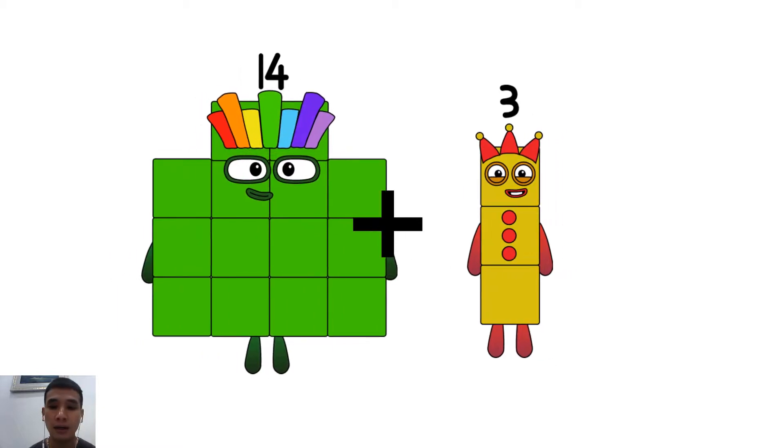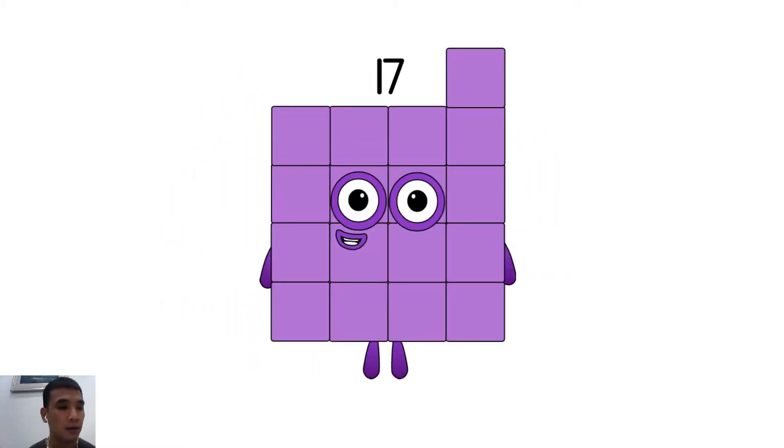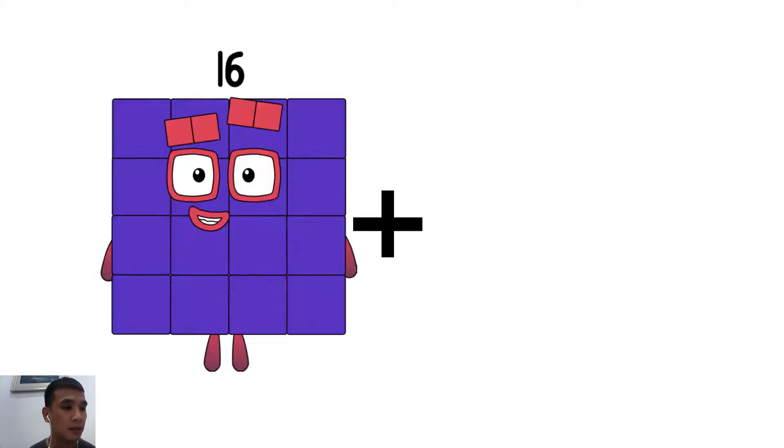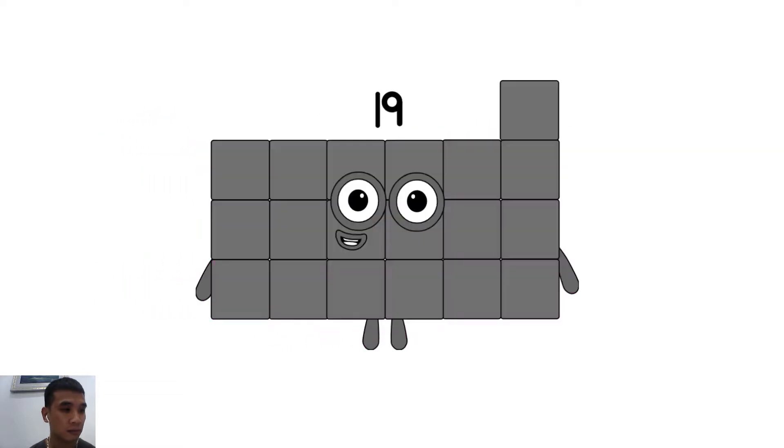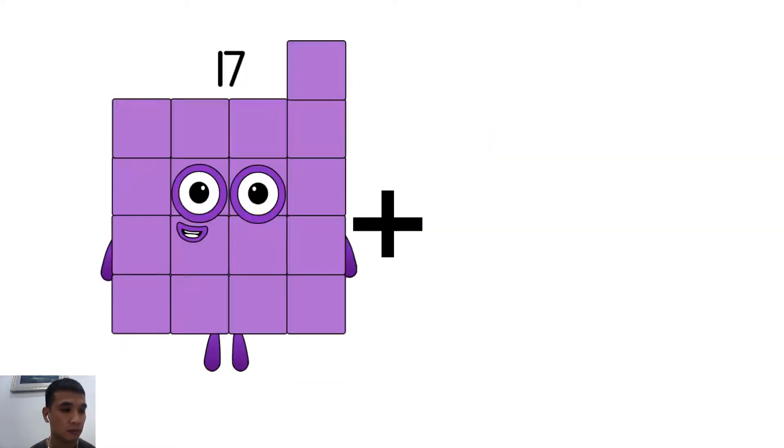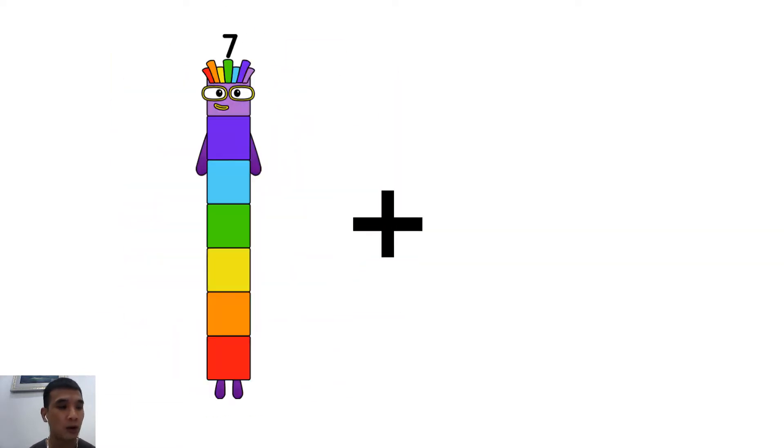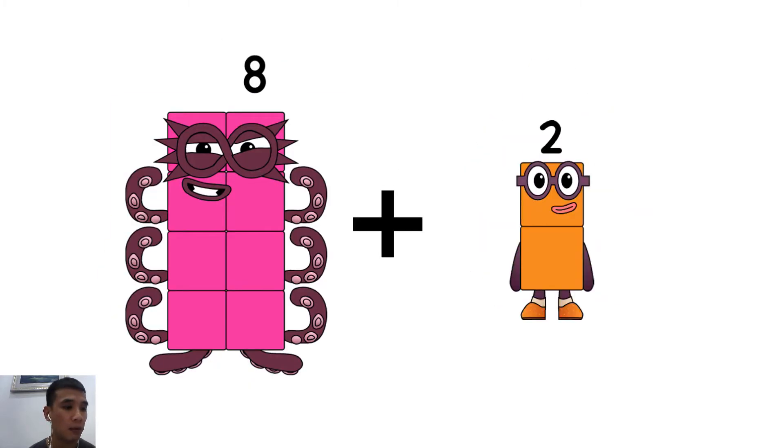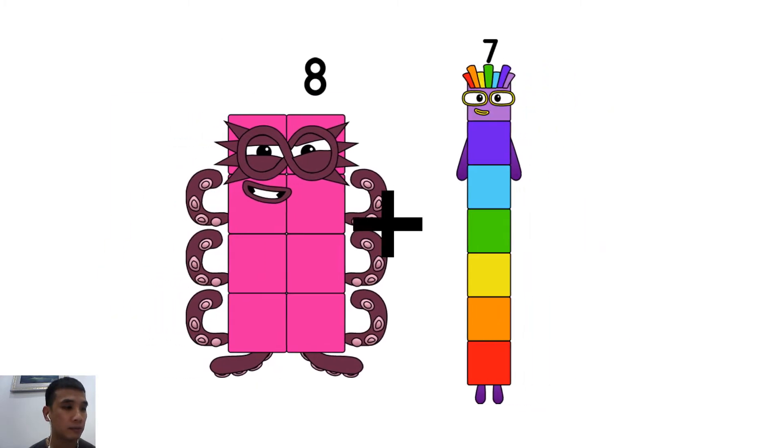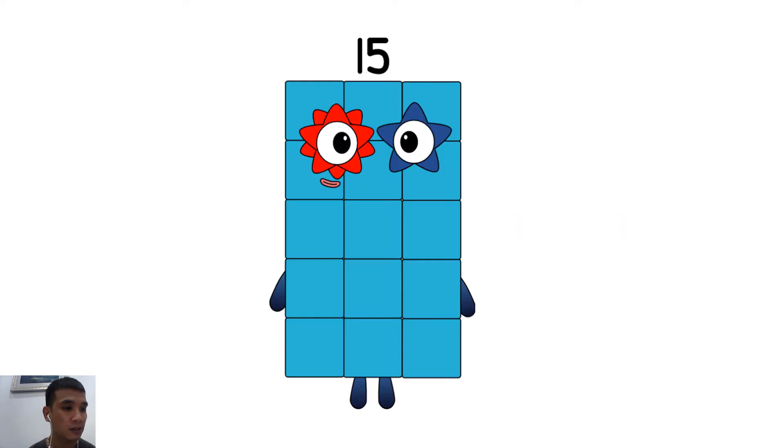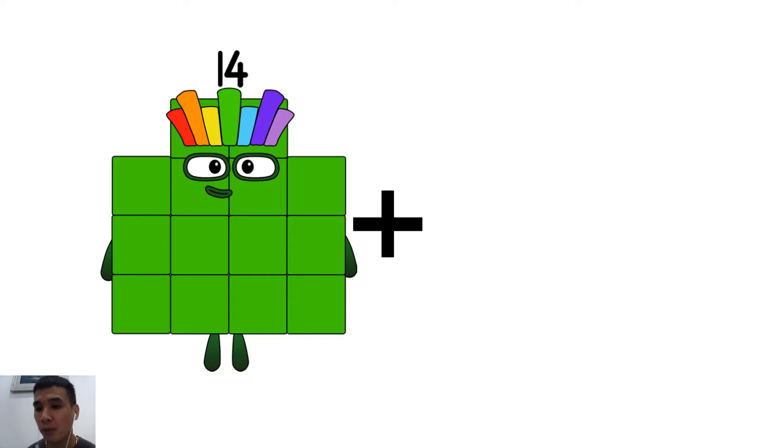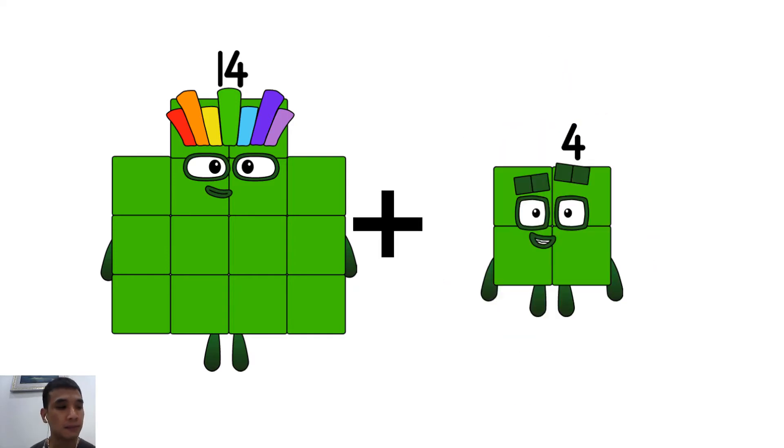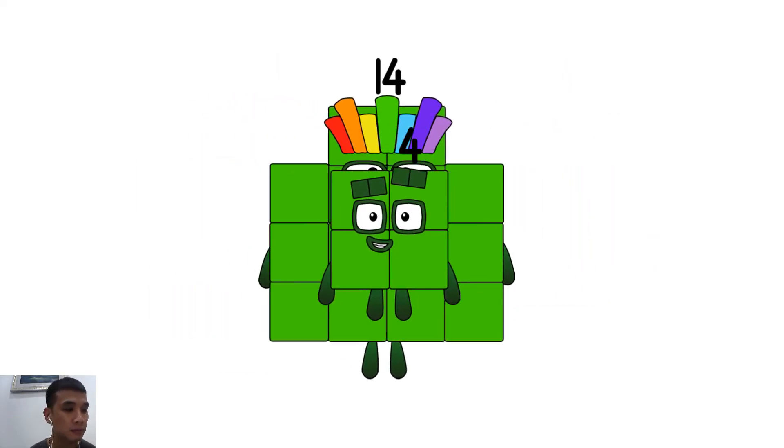3 equals 17, 18 plus 1 equals 19, 8 plus 7 equals 15, 14 plus 4 equals 18.